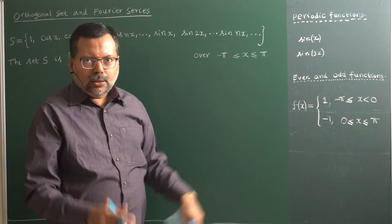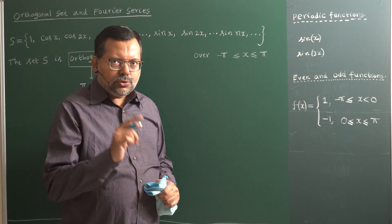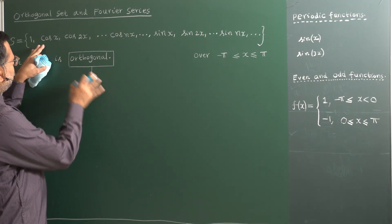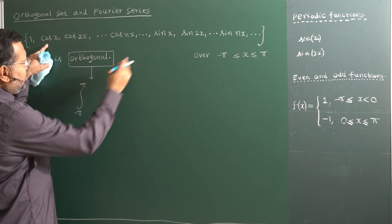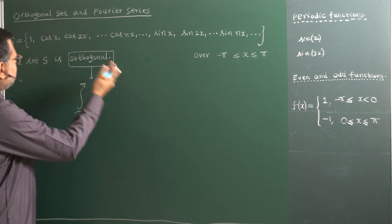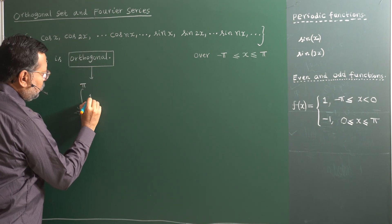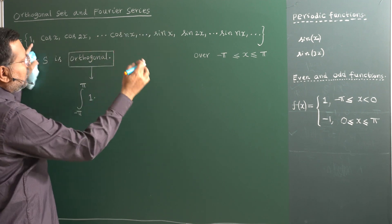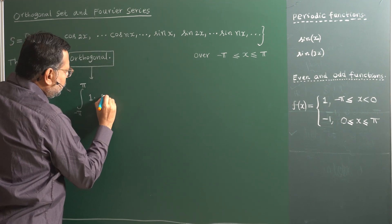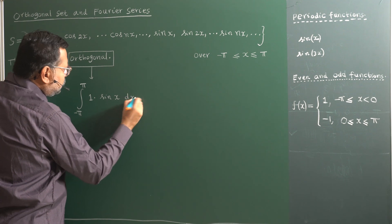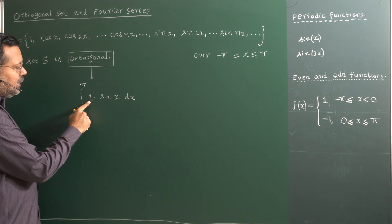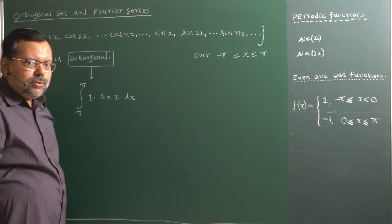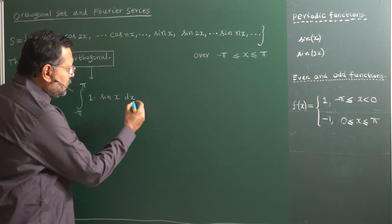For a different problem, a different range will be there, so you have to be careful with the given range. The first condition is to apply the given limits. The second condition is: you put the first element and then any other element. As an example, I write the first element cos(nx), then multiply by another element — say sin(x) — then integrate with dx. Any one element from the set multiplied by any other different element, and then integrated, gives an answer of zero.